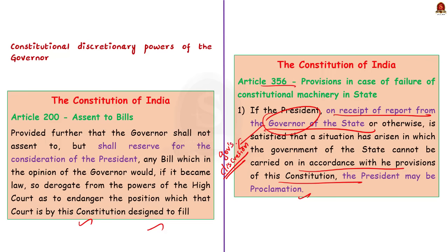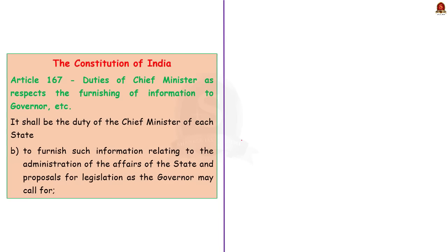Finally, as per Article 167, the governor can ask the Chief Minister of the state to furnish any information relating to the administration of the state, and can also ask the Chief Minister to furnish information related to proposals for legislation. These powers are also purely the governor's discretionary powers. These are some of the most important constitutional discretionary powers available to the governor.